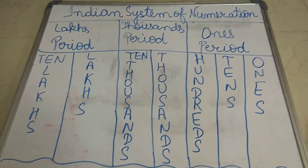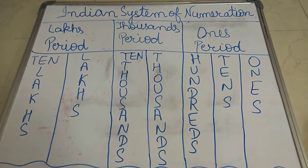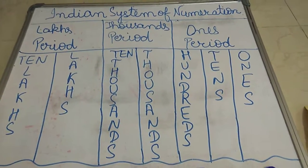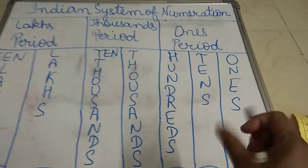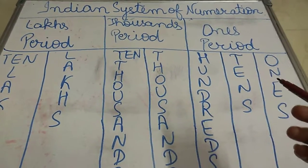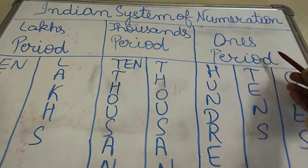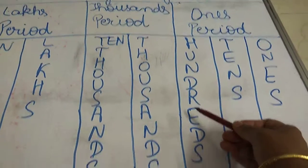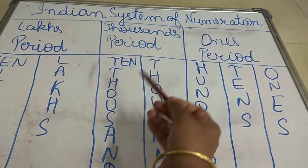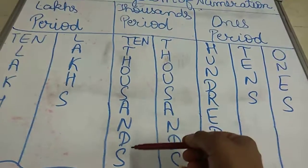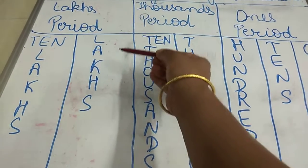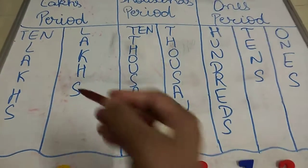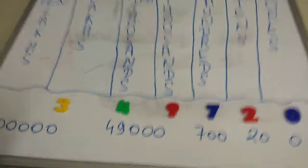Good morning to all the students. Now we will study about the Indian system of numeration, in which numbers are divided into some periods. These periods are: the ones period, which has three places — ones, tens, hundreds — then the thousands period, which contains thousands and ten thousands, then the lakhs period, which contains lakhs and ten lakhs. We will study up to only the lakhs period, meaning six-digit numbers.